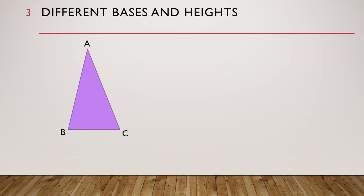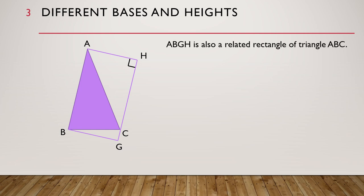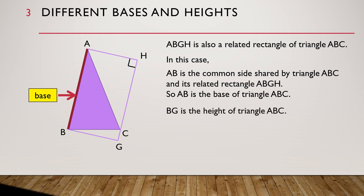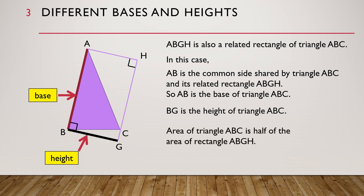Now let's look at triangle ABC by itself. We can also draw another related rectangle of triangle ABC. This new rectangle ABGH is also a related rectangle of triangle ABC. In this case, AB is the common side shared by triangle ABC and its related rectangle ABGH. So AB is the base of triangle ABC, and BG would be the height of triangle ABC. The area of triangle ABC is half of the area of rectangle ABGH, so the area of triangle ABC is still equal to half times base times height.